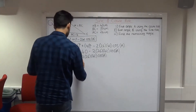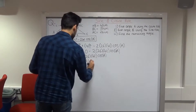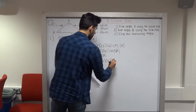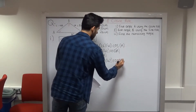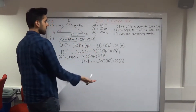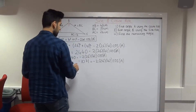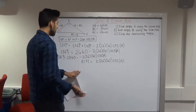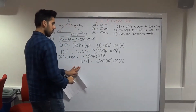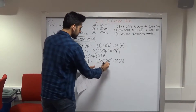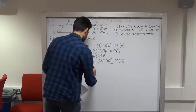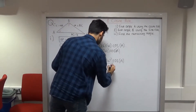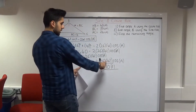Subtracting gives us −1071 = −2(26)(42)·cos(A). Because we have negatives on both sides, they cancel, leaving us with positives. Now to get cos(A) by itself, we divide both sides by 2 × 26 × 42. So our result is: cos(A) = 1071 / (2 × 26 × 42).